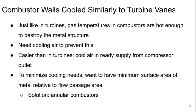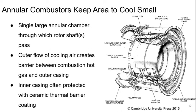The walls of the combustor are cooled in a similar manner to the turbine vanes. Just like in turbines, the gas temperatures in the combustor are hot enough to destroy the metal structure in minutes, so we need cooling air to prevent this. It's much easier than in turbines — cool air is in ready supply from the compressor outlet. To minimize cooling needs, we want to minimize the surface area of metal relative to the full passage area, and the solution to this is the annular combustor.